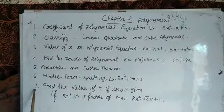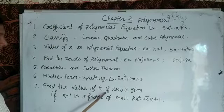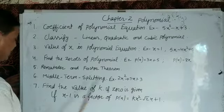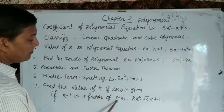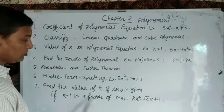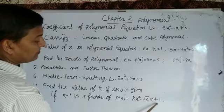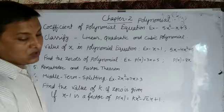Now, the seventh concept is find the value of k if zero is given. For example, if x - 1 is a factor of equation, then put x = 1 in the equation, and we get the value of k. Thank you.